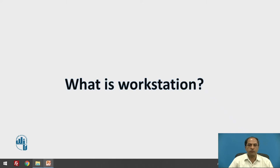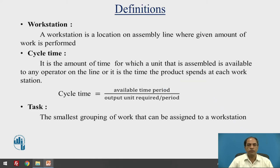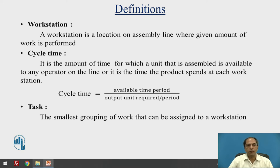We are talking about various workstations in line balancing. A workstation is a location on the assembly line where a given amount of work is performed, or it can be a combination of various machines taken together. The next definition is cycle time — it is the amount of time for which a unit being assembled is available to any operator on that line, or it is the time the product spends at each workstation. In short, cycle time is defined as total available time divided by output units required per period.